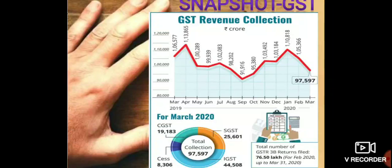This is the GST revenue collection image from March 2019 to March 2020. In March 2019, the GST revenue collection was one lakh six thousand five hundred and seventy-seven crore. From there, there was a hike in revenue collection to one lakh thirteen thousand eight hundred and sixty-five crore collected in April. From there, there was a deep downfall continuing till December 2019.